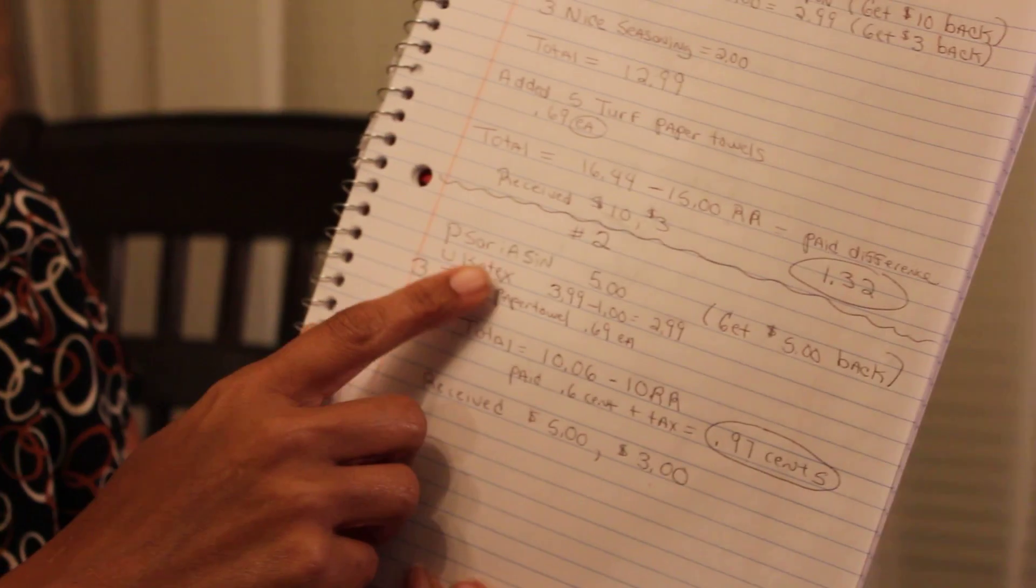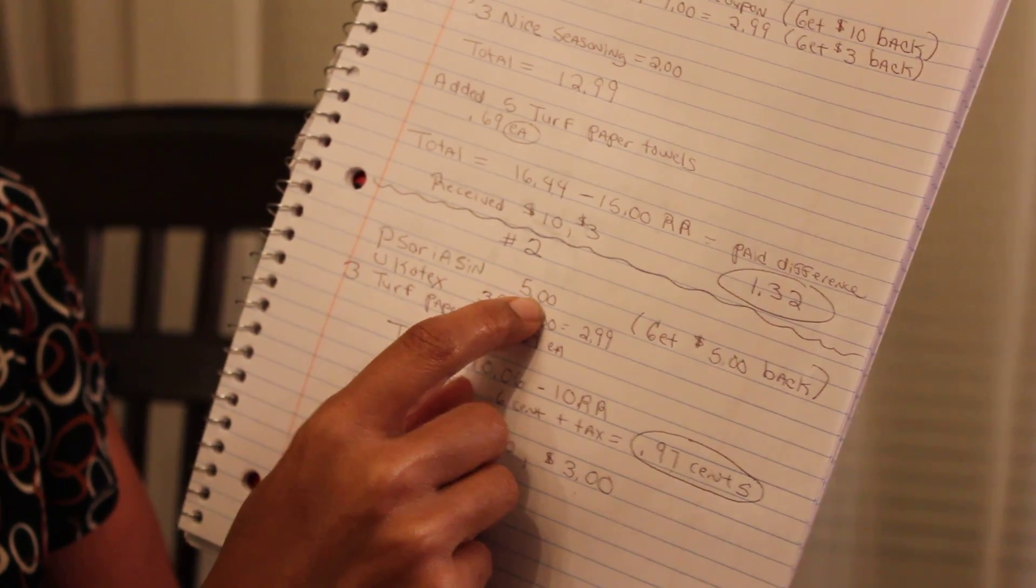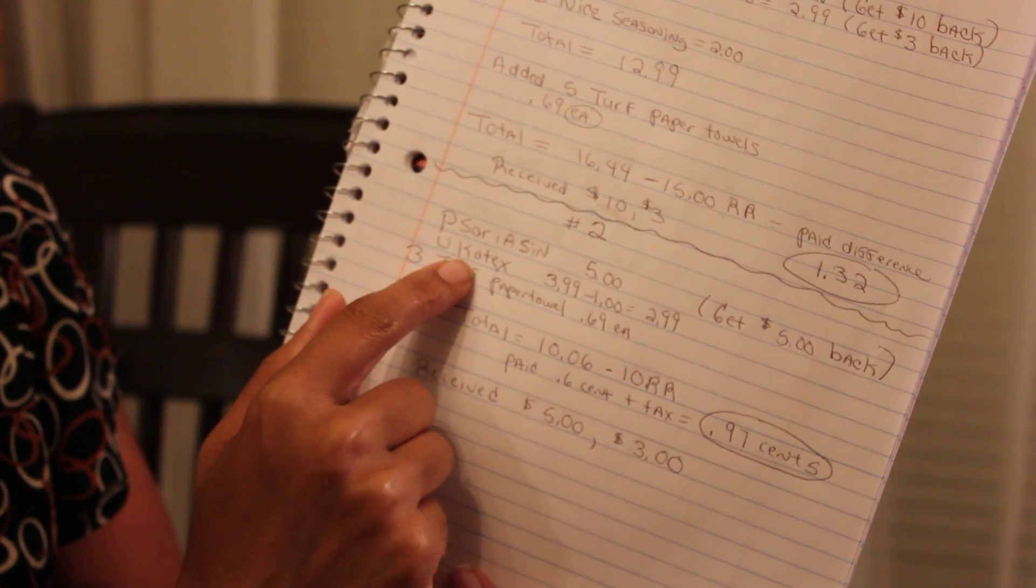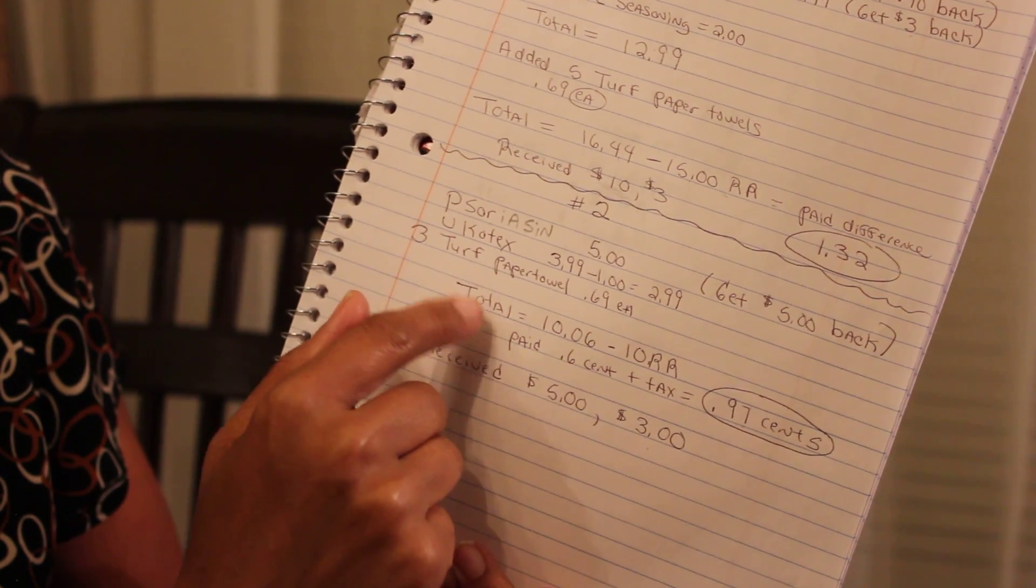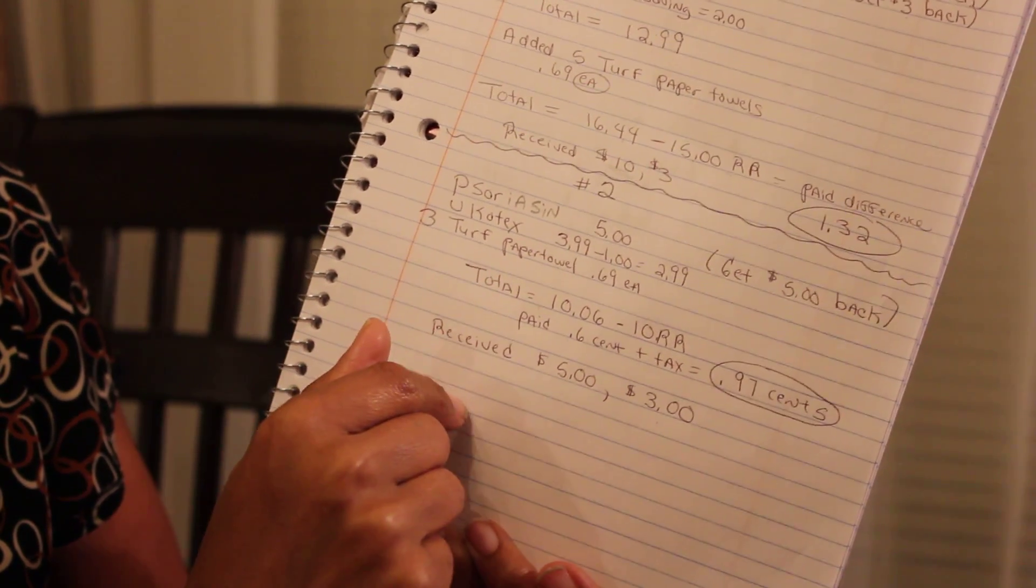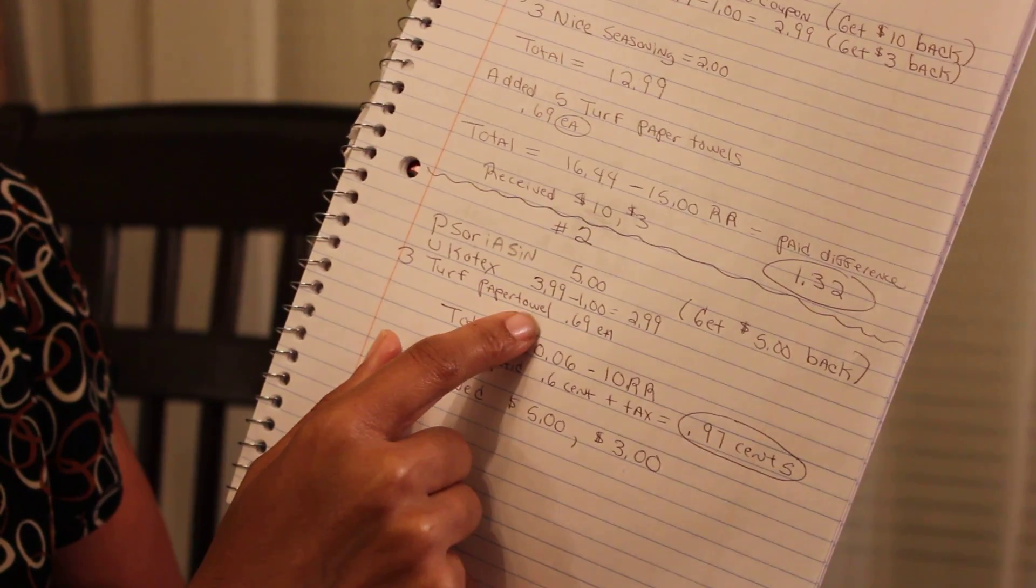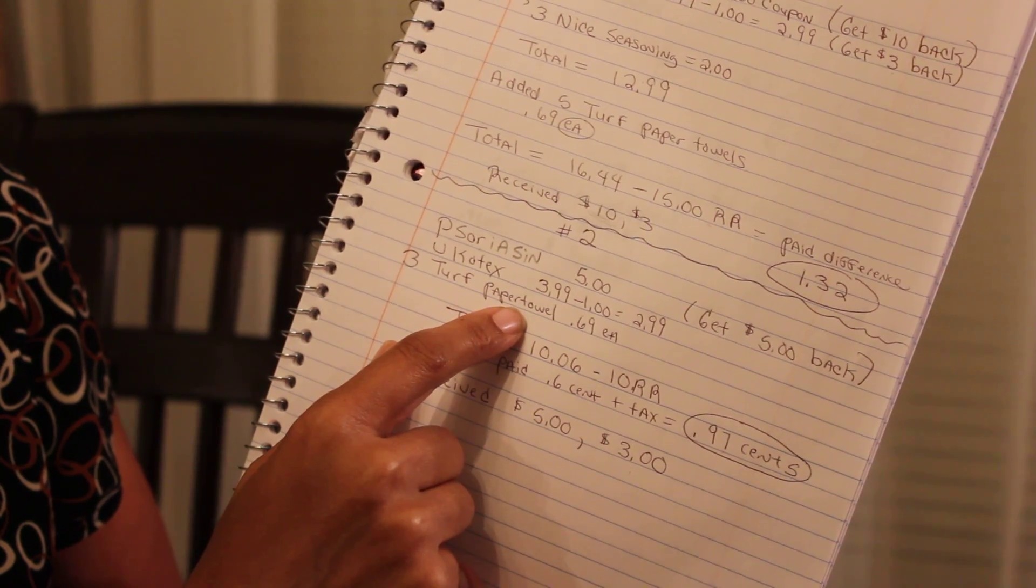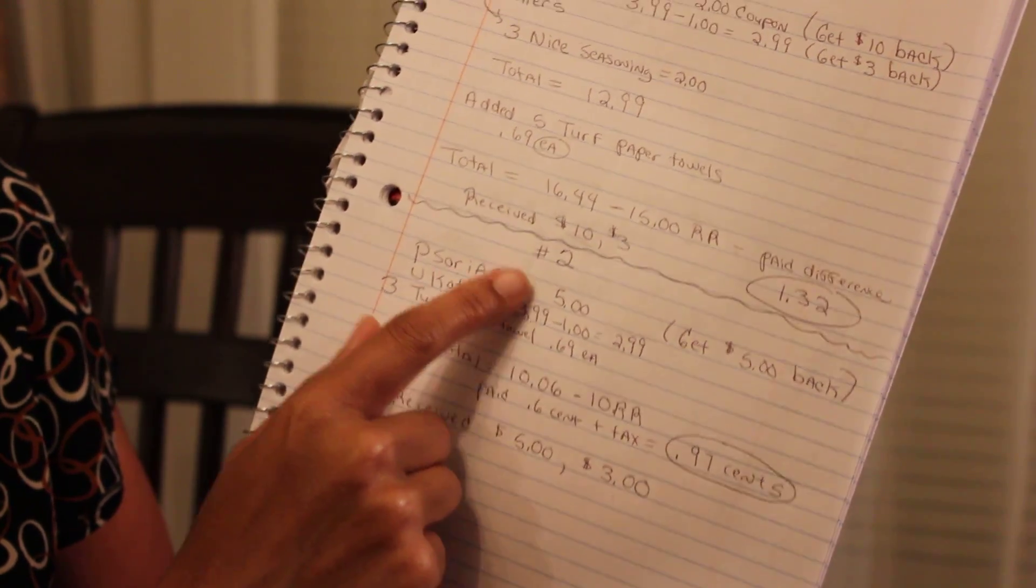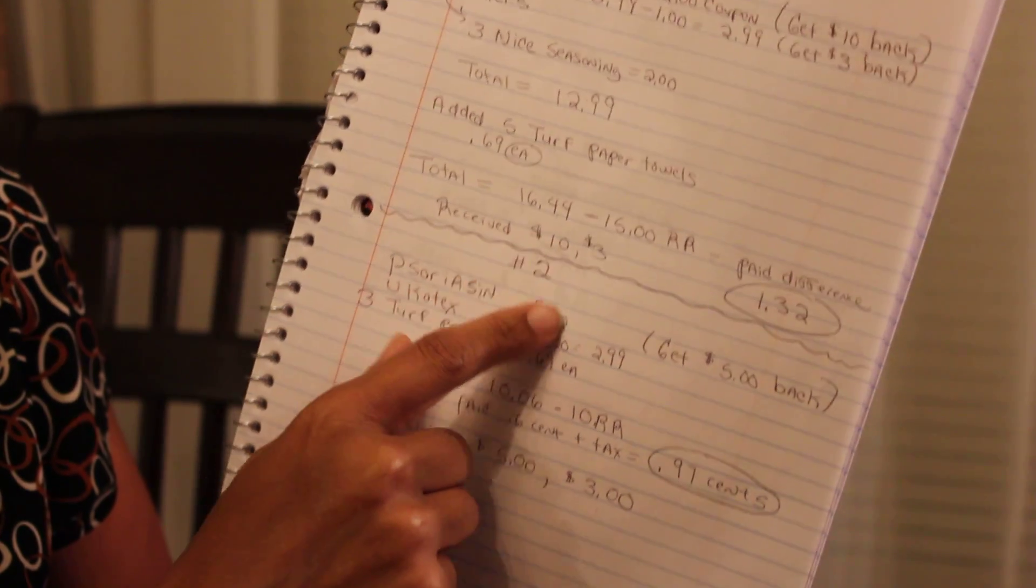Now my second transaction, I got the psoriasin. That was one of the deals where you spend $5 on it, they'll give you $5 back in register rewards. Then I did another Kotex one and I added three more paper towels. That brought my total to $10.06. The reason I added the paper towels, one, I needed them, and also I wanted to use my $10 from the first transaction. I had to make sure this added up to close to $10 or above before taxes.